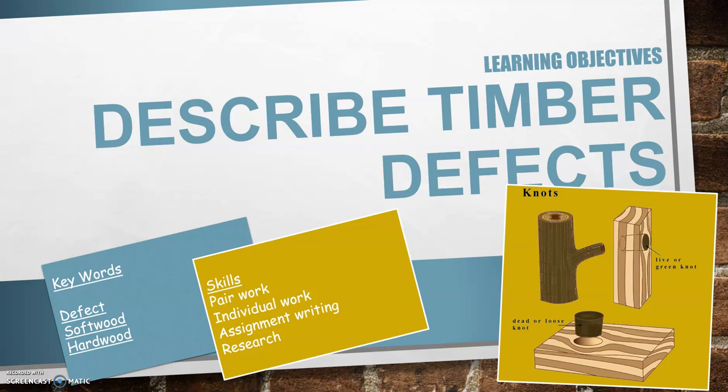So if you remember, last week we talked about timber; this week we're talking about its defects. According to the dictionary, a defect is a shortcoming, fault or imperfection, and that's the case with timber. It's a natural product and it can contain natural defects or seasoning defects.